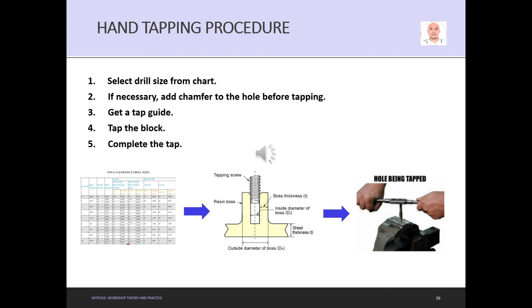Hand tapping procedure: Number one, select drill size from chart using the standard formula and table. Second, if necessary, add chamfer to the hole before tapping to make the screw enter smoothly as a guide. Third, get the tap guide. Fourth, tap the block slowly. Number five, complete the tap.